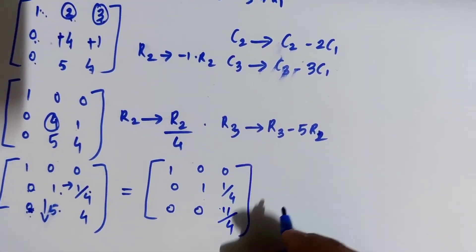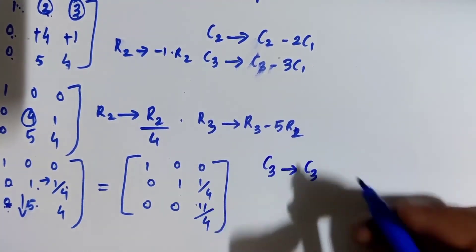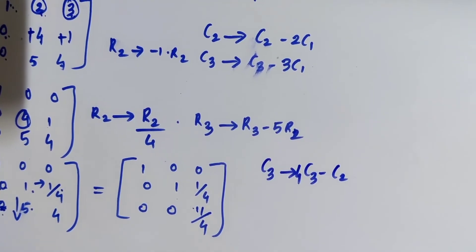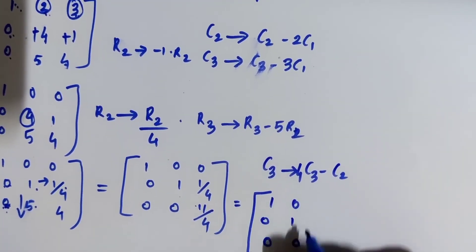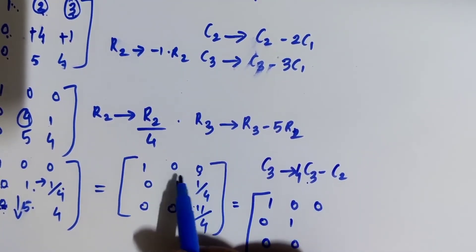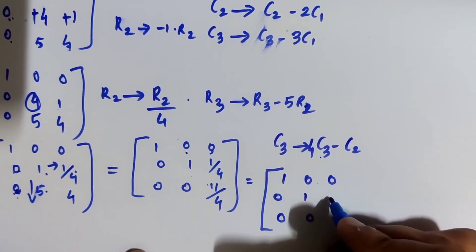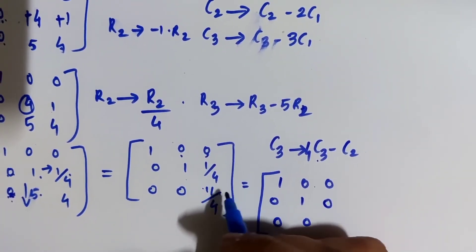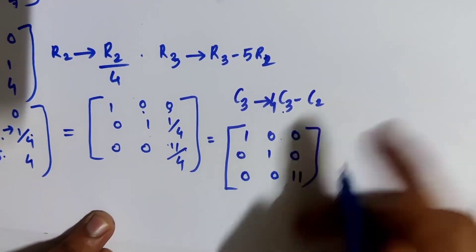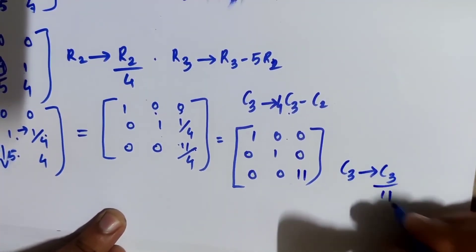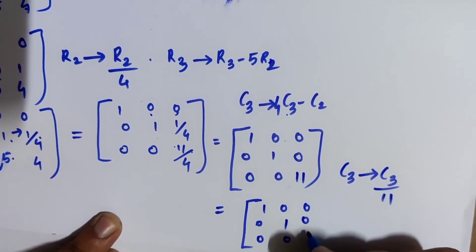To make the beside element (1/4) zero, use a column operation: 4C3 − C2. This gives column 3 as: 0, 0, 11. Then to make the third diagonal element equal to 1, do C3 → C3/11. The matrix now becomes: 1, 0, 0; 0, 1, 0; 0, 0, 1.